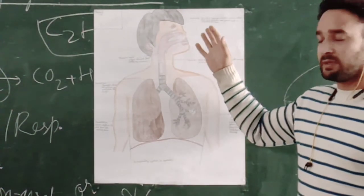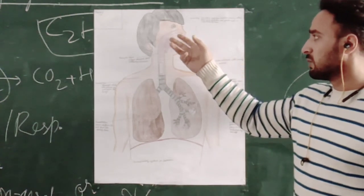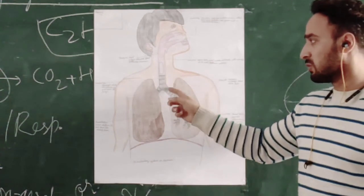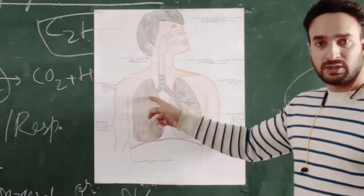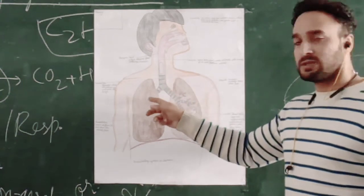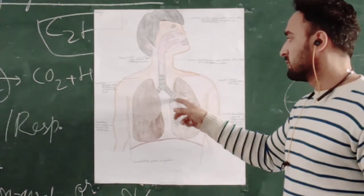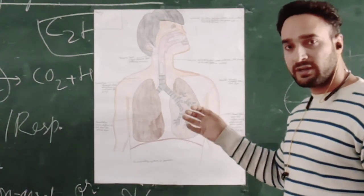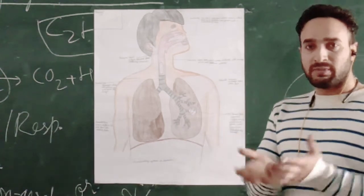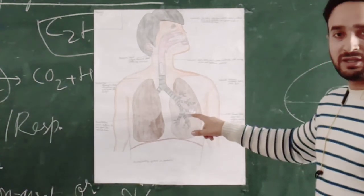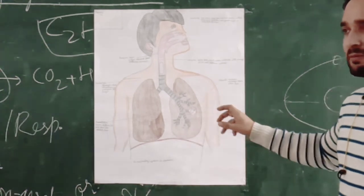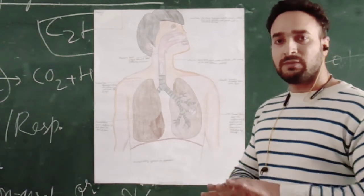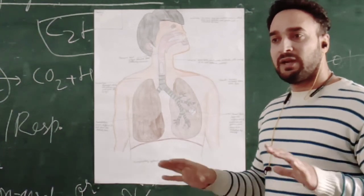The air enters through the nostrils, passes through the pharynx, the larynx, the trachea. The trachea divides into two bronchi — each bronchi enters the lung. We have a pair of lungs and the bronchi further divide into bronchioles, which further divide into finer air sacs or airbags which we call alveoli. There are about two million alveoli in each lung.